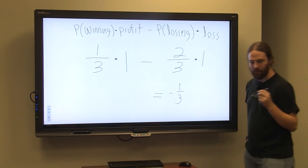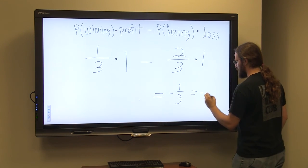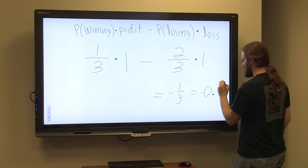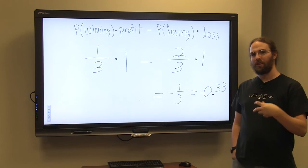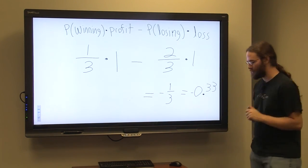Or since we're dealing with money here, I'm going to say a negative zero point three three. So on average, you would lose thirty three cents. That's what the negative zero point three three would say.